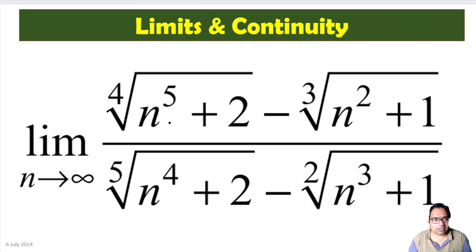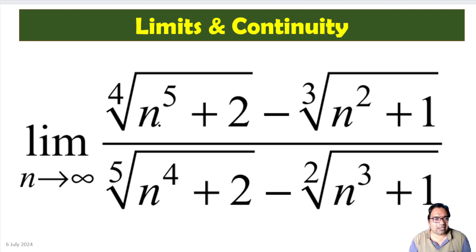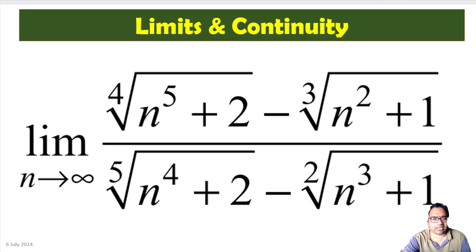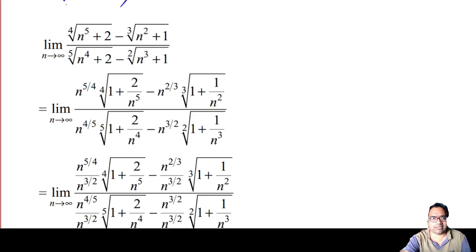Let us try to bring n into the denominator everywhere, into a 1/n format, because 1/n tends to 0 as n tends to infinity. Then we will divide by the highest power present in the denominator. First, let us take n common outside and get everything into 1/n format, then divide both numerator and denominator by the highest power of the denominator.